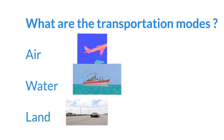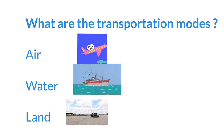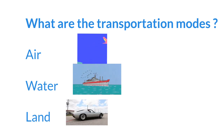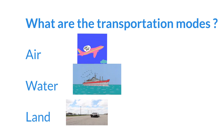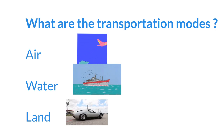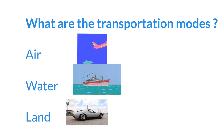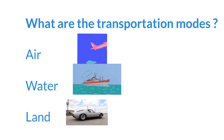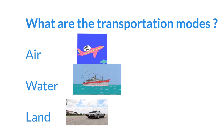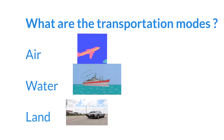We can sort these transportation modes into three groups: land, water, and air. Land transportation includes things like cars and buses. Water transportation includes boats and big ships. Air transportation includes airplanes. So we have land, water, and air — three special groups for our transportation friends. It's like they have their own neighborhoods.